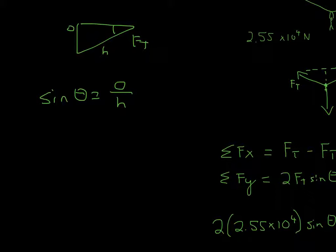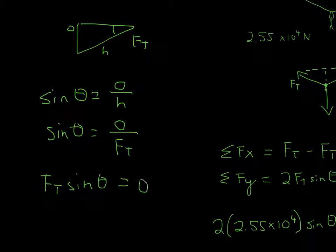And then all I did was, if it's sine theta, it would be sine theta is equal to opposite over hypotenuse. Hypotenuse is the force of tension. So it would be opposite over force of tension. And then just multiply each side by force of tension to get force of tension times sine theta is equal to the opposite side.